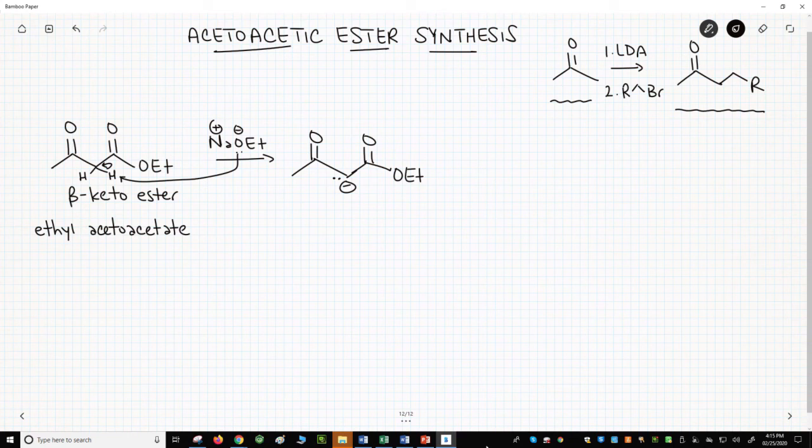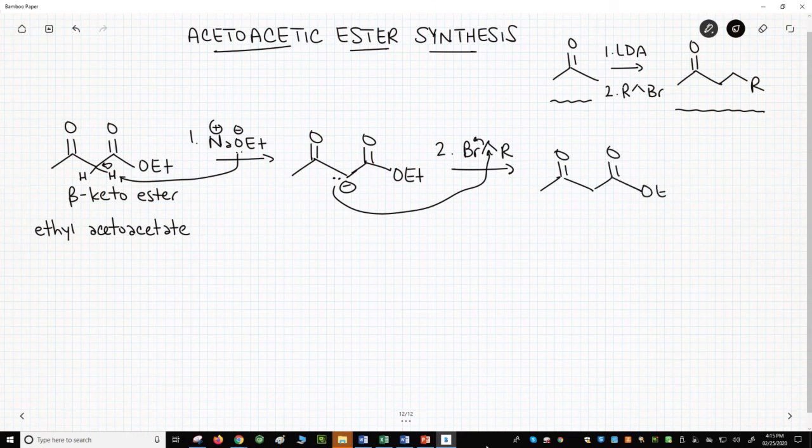Okay, now that we have an enolate, we can alkylate it. So our first step is base. Our second step will be treatment with a primary halide. That's an SN2 reaction. And we get our alkylated product.